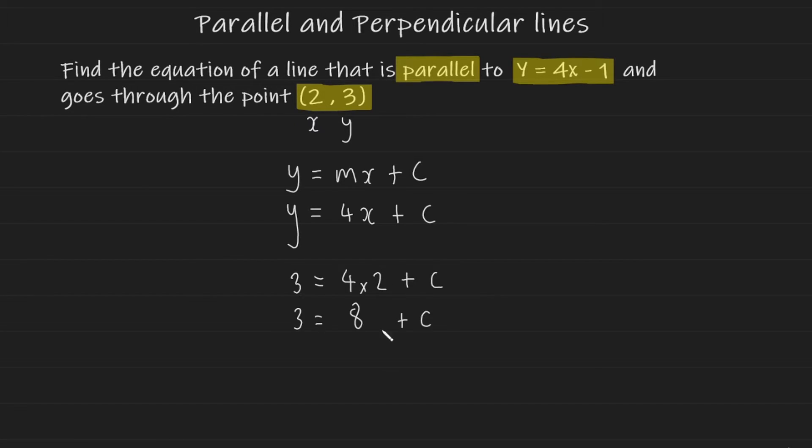And now if you simplify, we end up with 3 equals 8 plus c, rearranging for c, minus 8 to both sides, we end up with c is equal to negative 5. And so now we can write our full equation of the line that we are looking for as y equals 4x minus 5. And there you have it. Now we found the equation of the line that is parallel to this equation of the line that they've given us, and it goes through the points (2, 3).